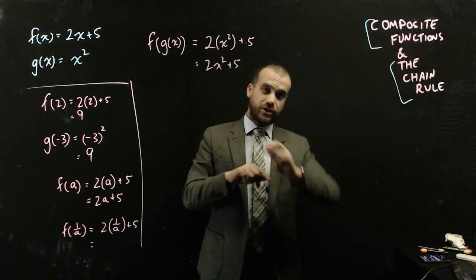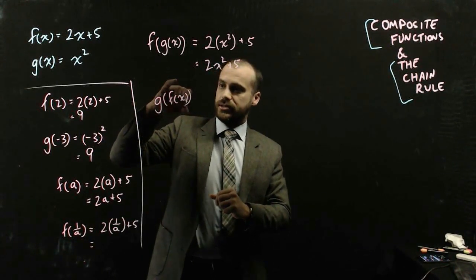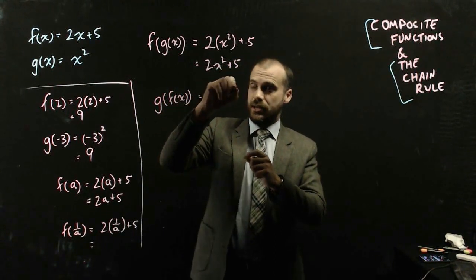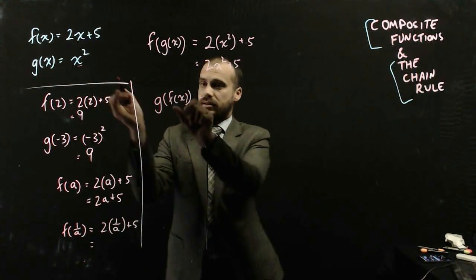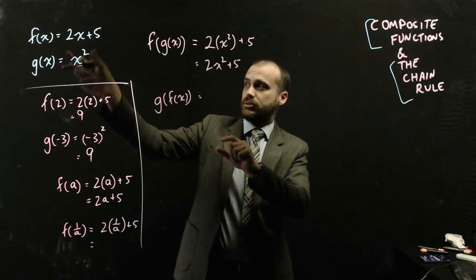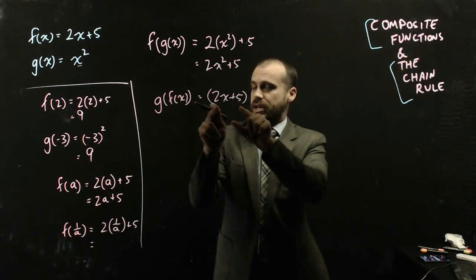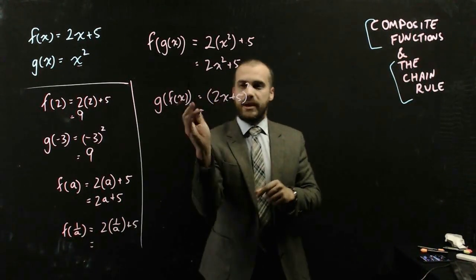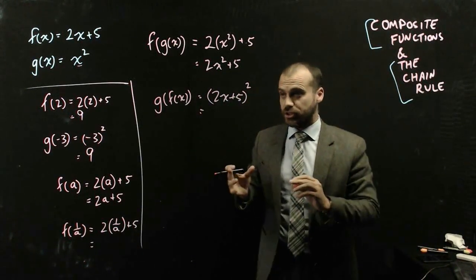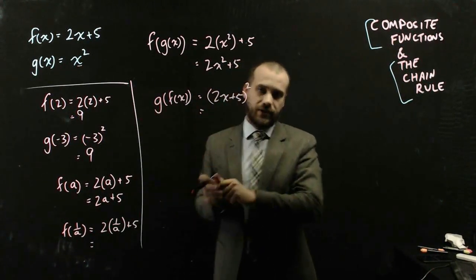This other composite function is the one that's going to be most useful to us: g of f of x. What that says is take g of x — that's x squared — and everywhere you see x, put in f of x. So x is here; I'm going to put 2x plus 5 in for x and square it. I could expand that if I want, but that's the important bit. Those are what composite functions are — a function inside of another function.